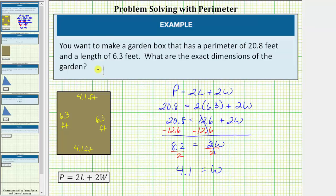So now we know the garden box is 6.3 feet by 4.1 feet.